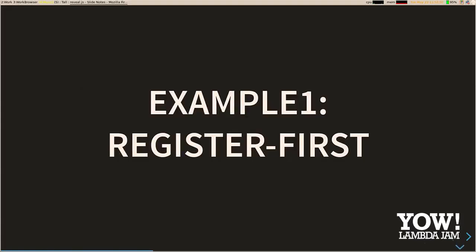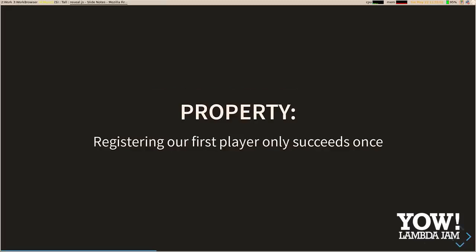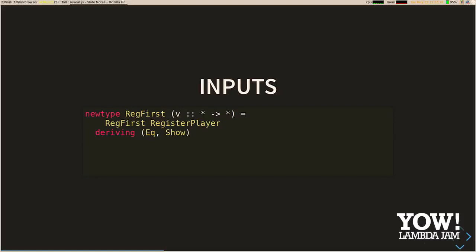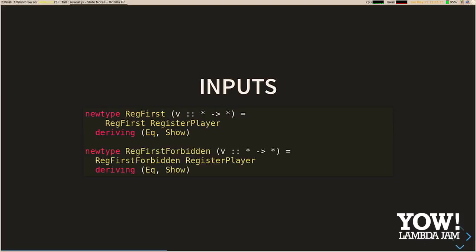Some examples. The first one is registering our first player — the property that this only succeeds once. We start with our state: just a boolean flag to mark whether we've registered our first user or not. Then we need inputs: a reg-first input taking player registration information, used for the success case; and a reg-first-forbidden input, very similar, used to test failures — once we've registered our first user, we want to make sure that trying again gives the appropriate error response.